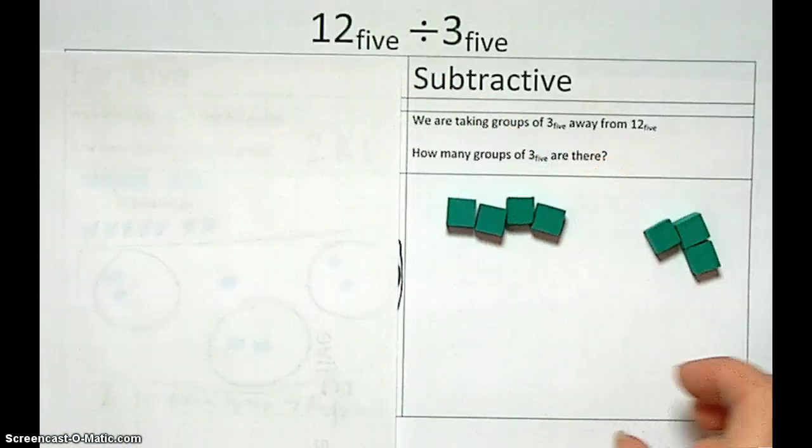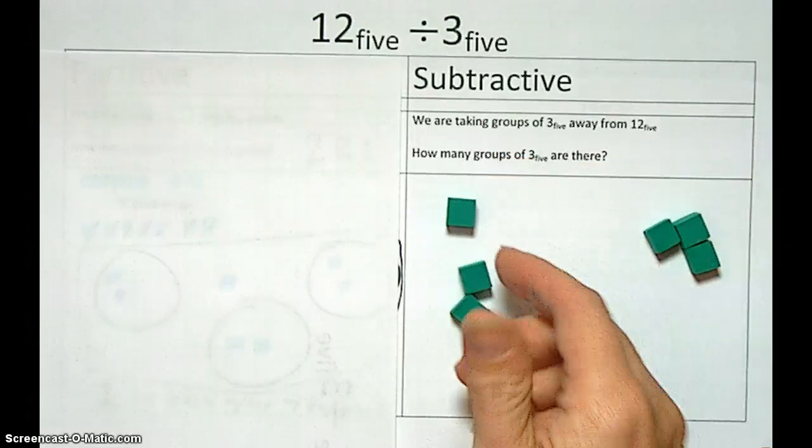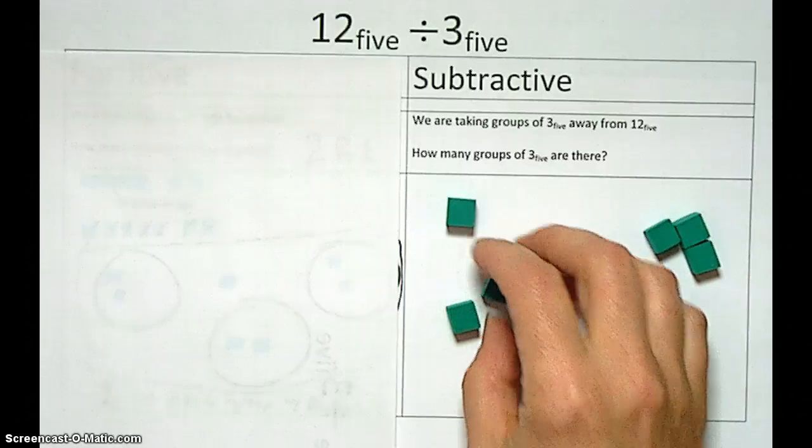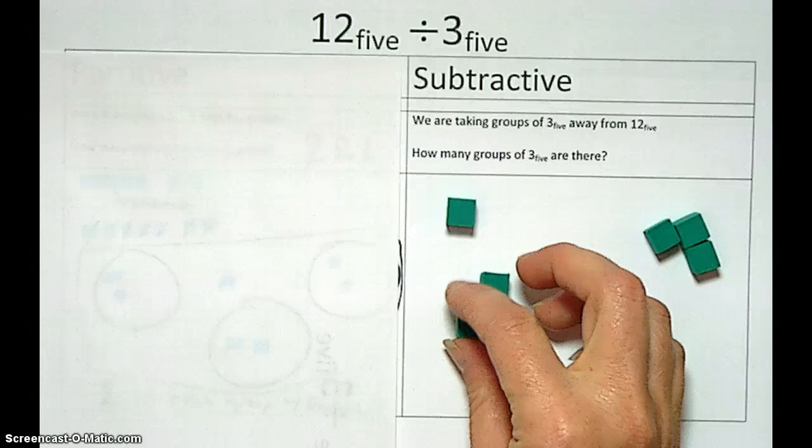This time we need groups of 3. So we've got to go, okay, here's one group of 3. Here's one group of 3. Oh, well, we don't have another group of 3. So there again is a remainder.